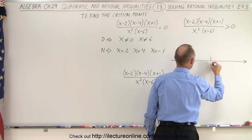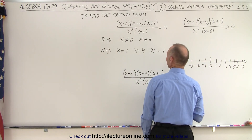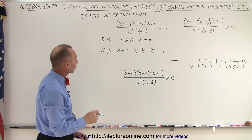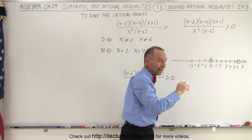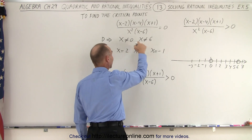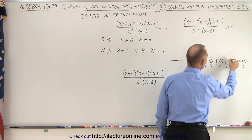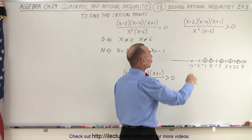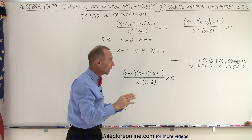Here's a number line with zero marked. We place those critical points: x equals zero and x equals six. Notice we cannot make those solid circles because zero and six are not part of the solution — x cannot equal those two values. Then we have two, four, and negative one, with open circles, because this is a strictly greater than zero inequality, not greater than or equal to, so the endpoint values are not included.